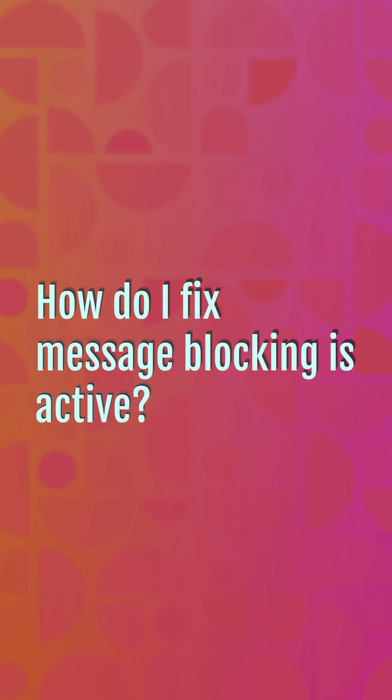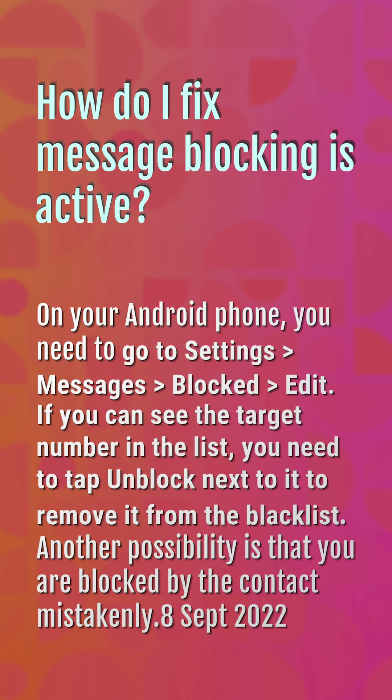How do I fix 'message blocking is active' on your Android phone? You need to go to Settings, then Messages, then Blocked. Tap Edit — if you can see the target number in the list, you need to tap Unblock next to it to remove it from the blacklist. Another possibility is that you have been blocked by the contact mistakenly.